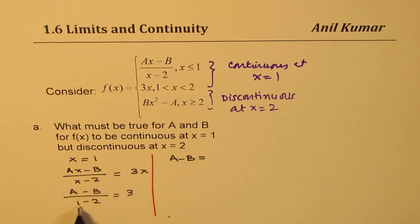Now we can just cross multiply and solve. So we have A minus B equals minus 1 equals 3, or we have A minus B equals, cross multiply, so minus 3. We can write A equals B minus 3.